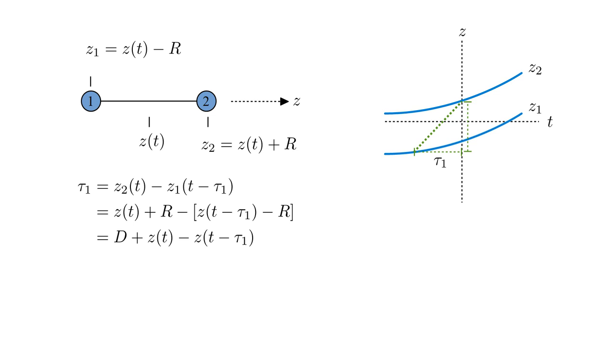Substituting the Z-one and Z-two expressions, we have tau-one equals D plus Z of T minus Z of T minus tau-one.